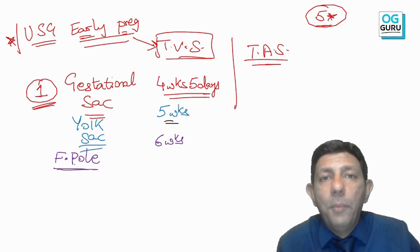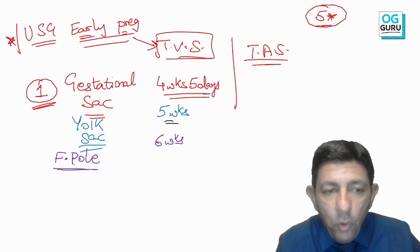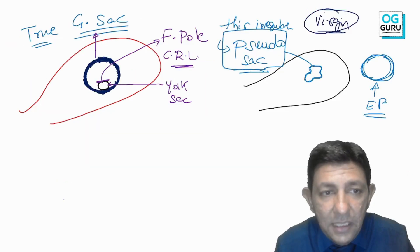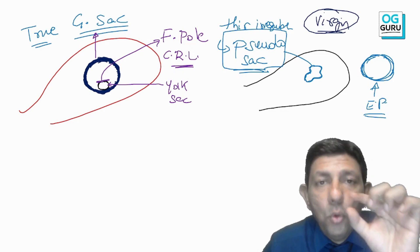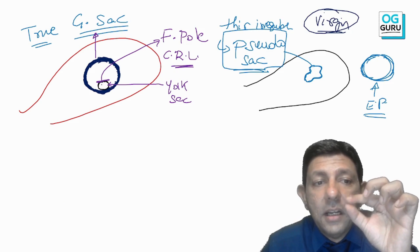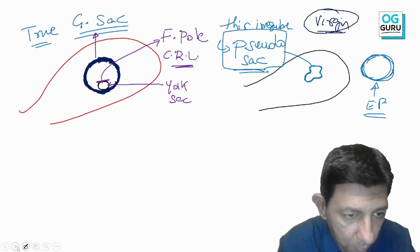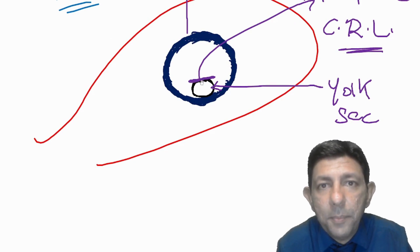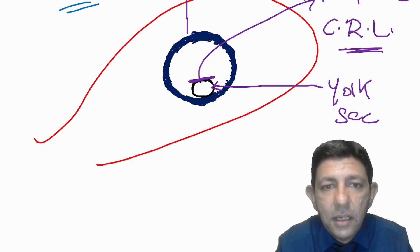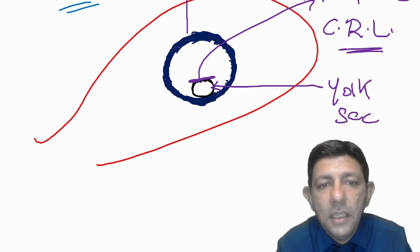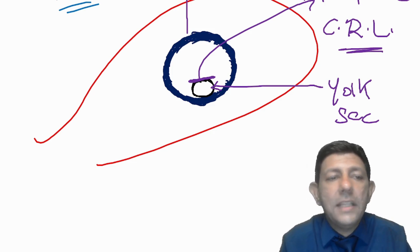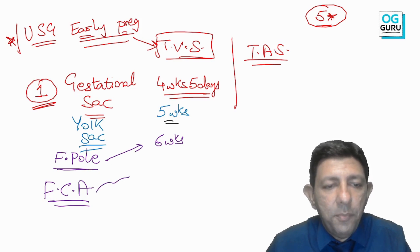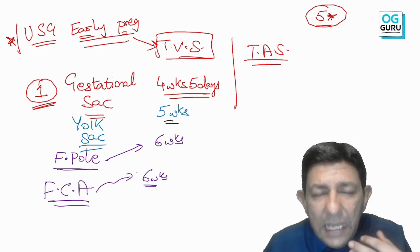After the fetal pole appears, the baby shows signs of life — fetal cardiac activity. Inside the small fetal pole, you can see a flicker on the sonography machine, like a tuk-tuk-tuk flickering. This is called fetal cardiac activity and is also seen at six weeks of pregnancy.